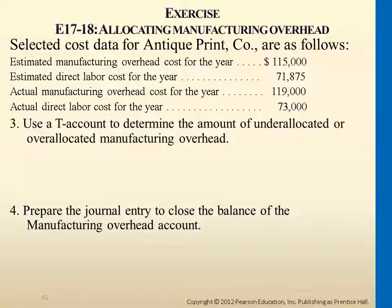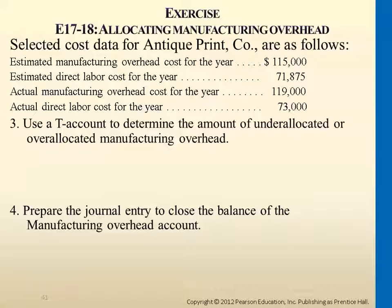If we want to fill out this T-account, what number should we put under a debit or under a credit? Debit. So if we open up a T-account called manufacturing overhead and we want to determine under-allocation or over-allocation, we have two numbers. The debit side is actual costs; allocation is the credit side. So 116,800 — that we just assigned — this is the allocation part.